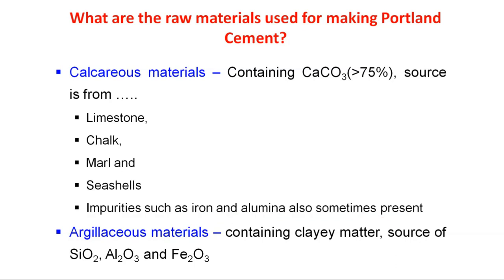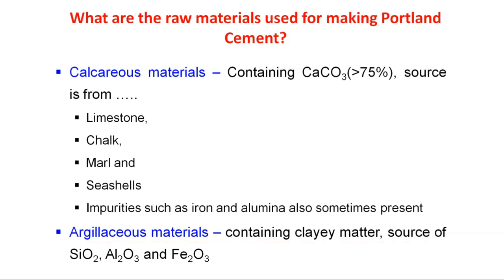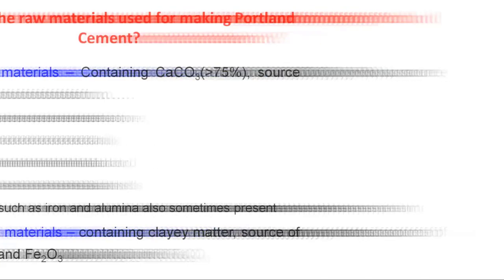The second raw material used in manufacturing Portland cement is argillaceous material, which is the source of silica, alumina, and ferrite components. Without this argillaceous material, we cannot develop Portland cement.